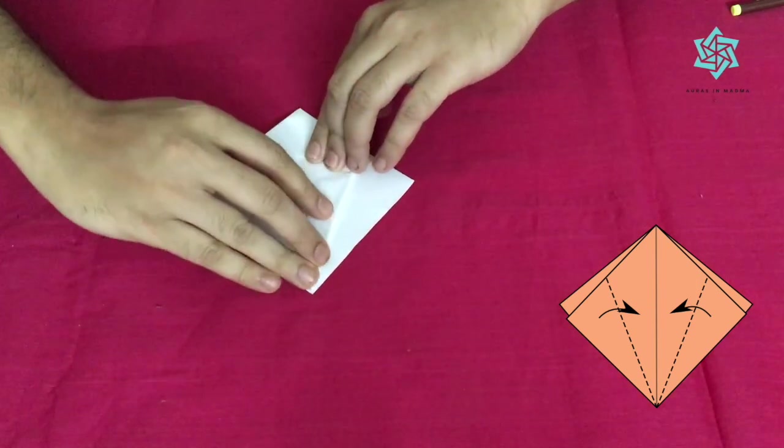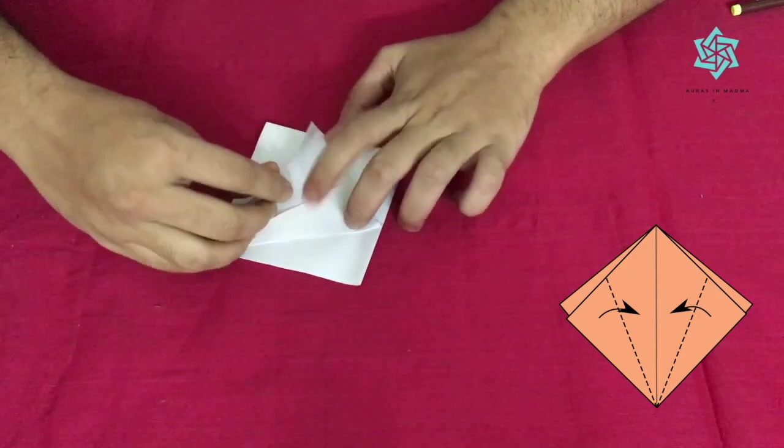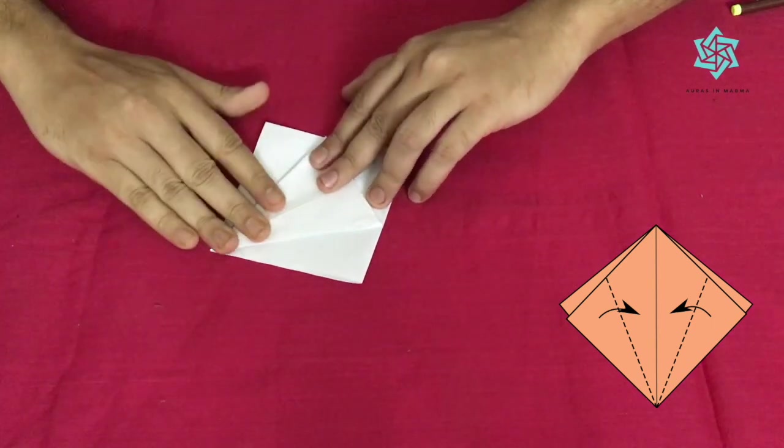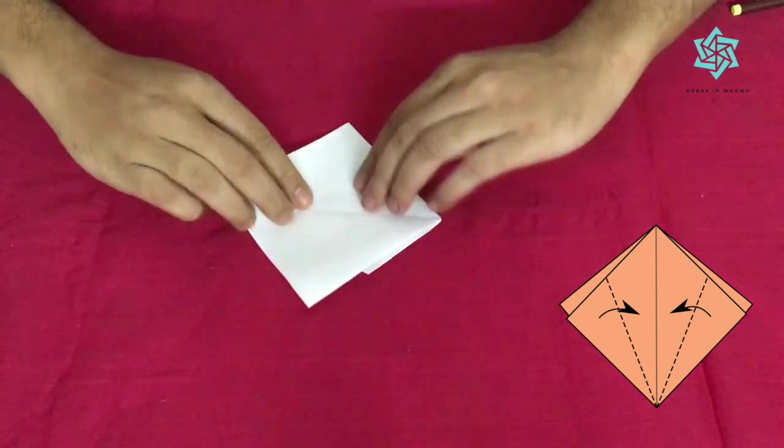We have to do this for all the four edges. Mind you, this is a pre-crease, that is we'll be opening this up again. This pre-crease would help us in folding our crane. So on the other two sides.